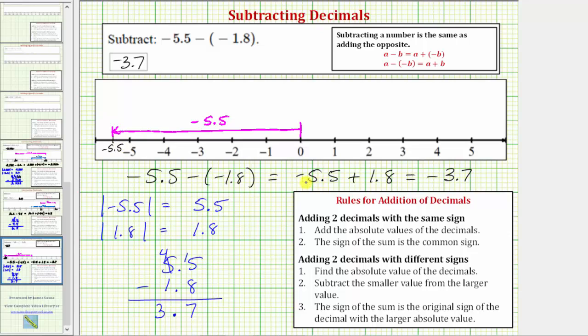And then from here, because we're adding 1.8, we would move right 1.8 units, which takes us back to negative 3.7, which is just to the left of negative 3.5.